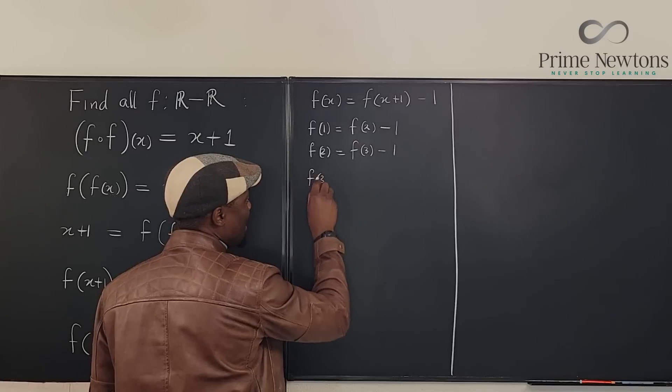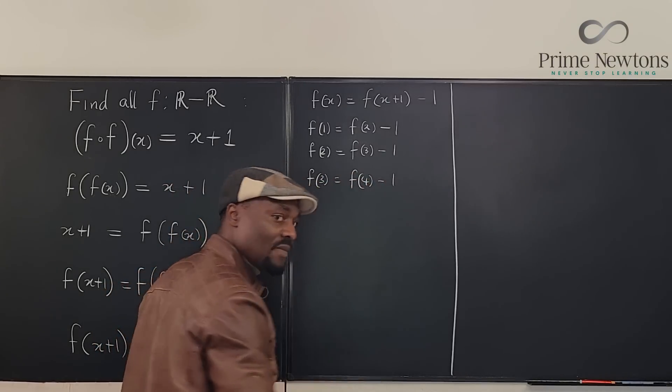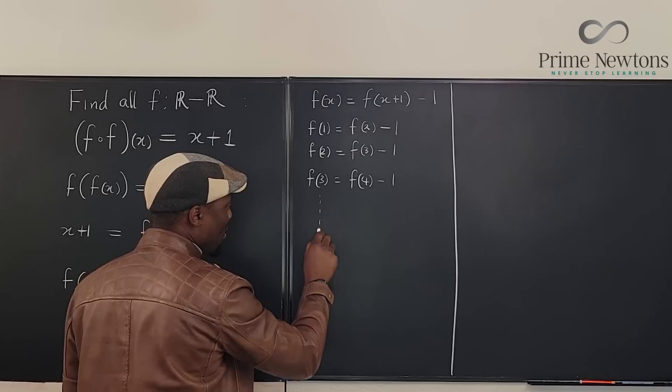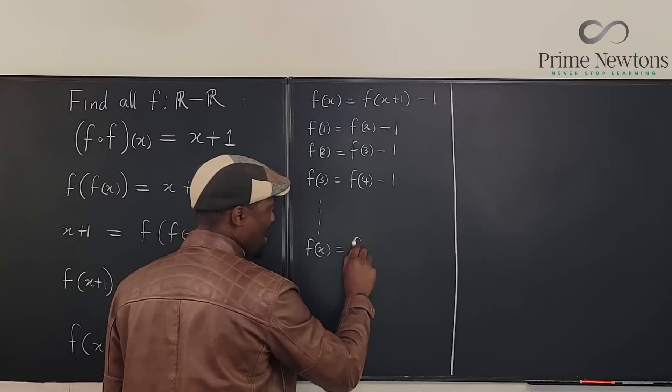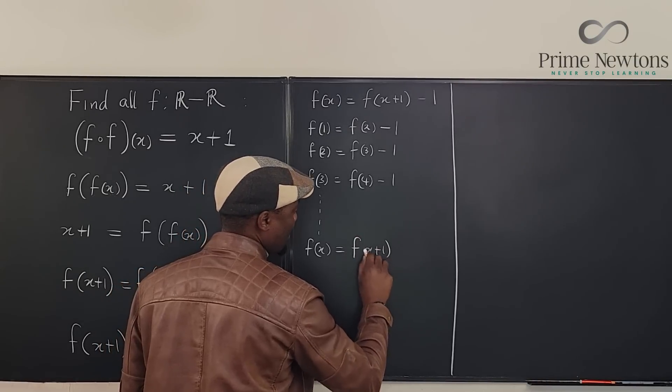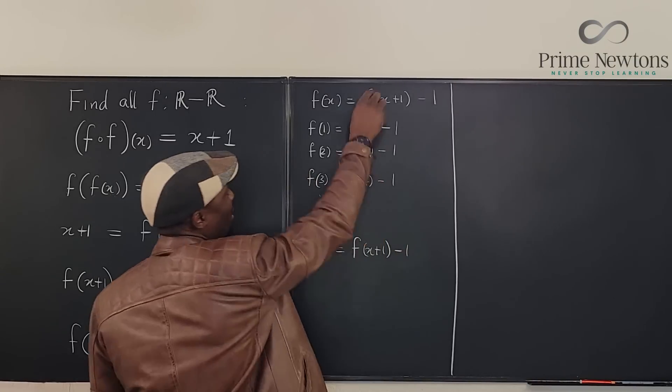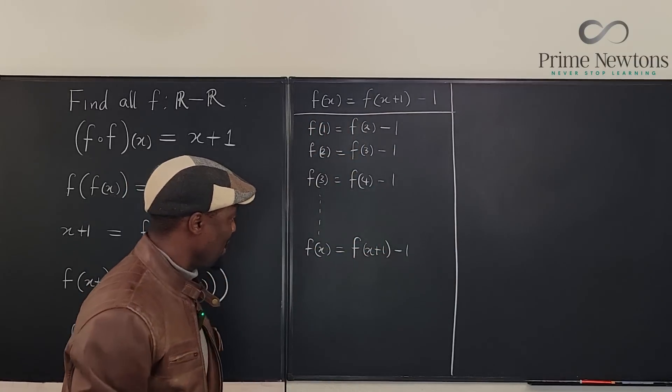A pattern is getting itself established. We go to f of three is going to be f of four minus one. I can keep going until I get to f of x. This is going to be f of x plus one minus one. I'm not including the first one. So let's just say this is what I'm working with.